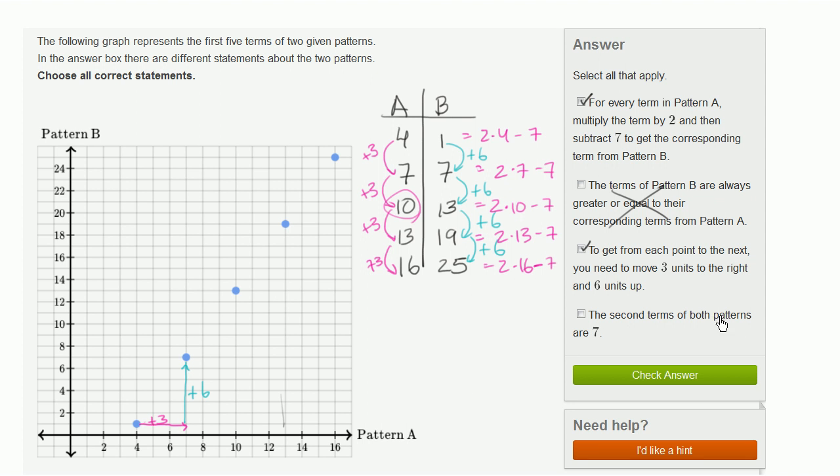The second terms of both patterns are 7. Well, yeah, we see that right over here. The second terms are 7. We have 7 here and we have 7 there. And so that is right as well. So the only one that doesn't apply is this second one. This is not right.